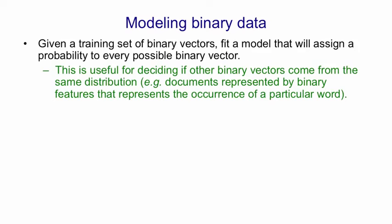And so you could use a set of hidden units to model the distribution for each document, and then you could assign a test document to the appropriate class by seeing which class of documents is most likely to have produced that binary vector.